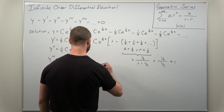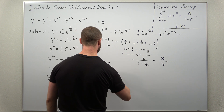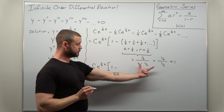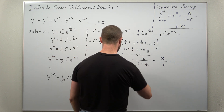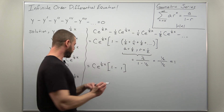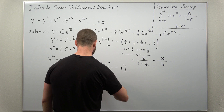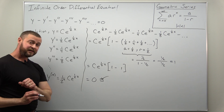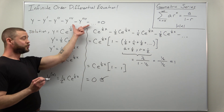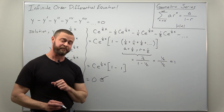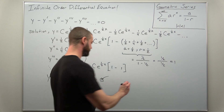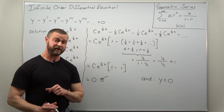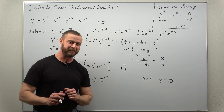So the sum in the parentheses comes out to one. What we have is c times e to the one half x times the quantity one minus the infinite series which sums to one, and we get zero in the brackets — thereby verifying that y equals c times e to the one half x is a solution to our infinite order differential equation. There is another solution, but it's boring: y equals zero, the trivial solution, is also a solution, but no one cares about the trivial solution.